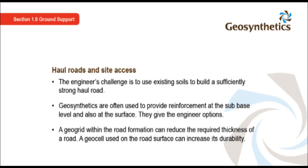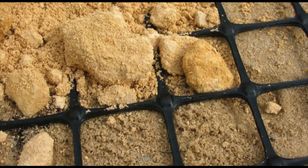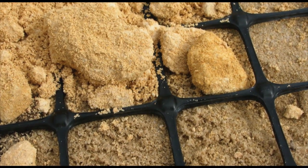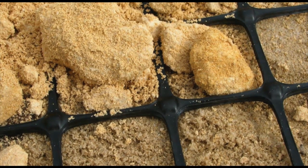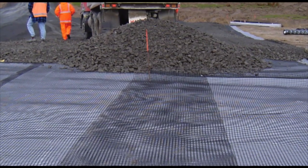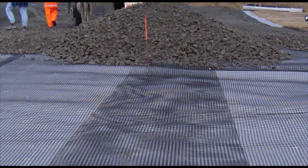The engineer's challenge is to use existing soils to build a sufficiently strong haul road. Geosynthetics are often used to provide reinforcement at the sub-base level and also at the surface — they give the engineer options. A geogrid within the road formation can reduce the required thickness of a road, while a geocell used on the road surface can increase its durability. Here you can see a biaxial geogrid — it has strength in both directions and interlocks with the soil particles to form a stronger haul road base. Road base material is placed on top of a rolled-out geogrid and geotextile; the geotextile provides separation while the geogrid provides the reinforcement function.